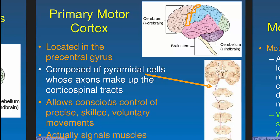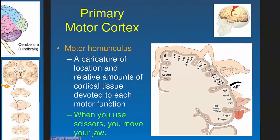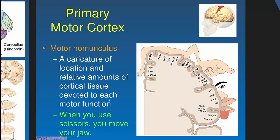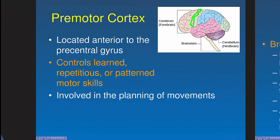Individual neurons in the primary motor cortex move individual muscles — for example, forming a fist requires moving each finger separately. The homunculus ('little man') maps where those neurons are. About halfway down is where motor neurons control the hands. The size of each body part in the homunculus reflects how much cortex is dedicated to it — a lot is dedicated to the thumb and lips. Clinically, a small stroke might only affect the hand, while a larger one affects legs too.